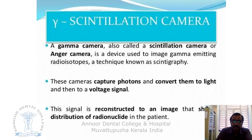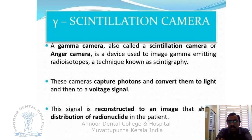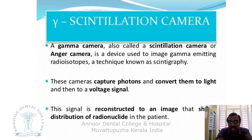After injecting Technetium-99, it emits gamma rays which are captured by a special device called the scintillation camera or gamma camera. It is used to image gamma-emitting radioisotopes in a technique known as scintigraphy. These cameras capture photons and convert them to light and then to a voltage signal. The signal is reconstructed into an image showing the distribution of the radionuclide in the patient.